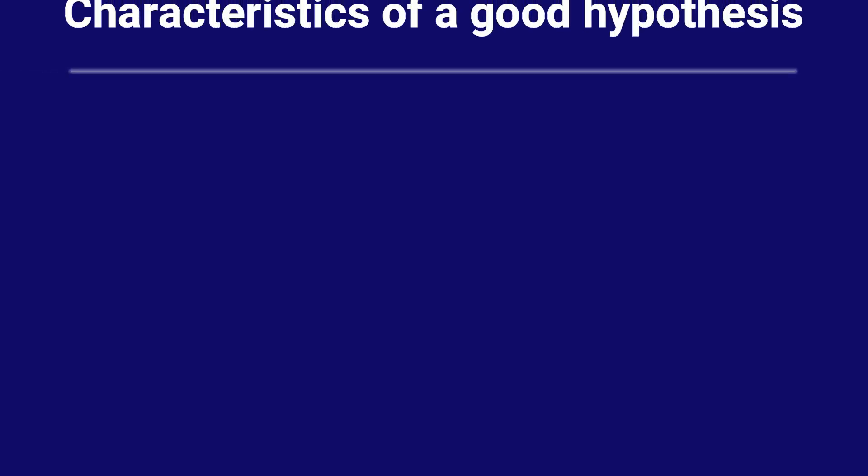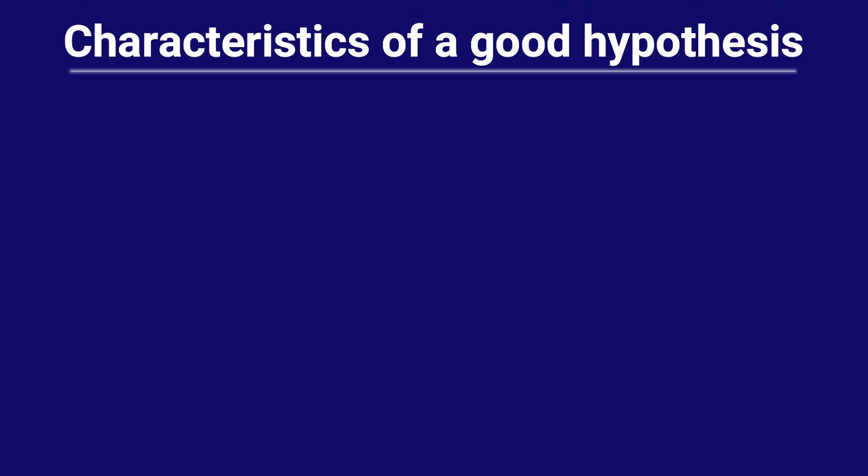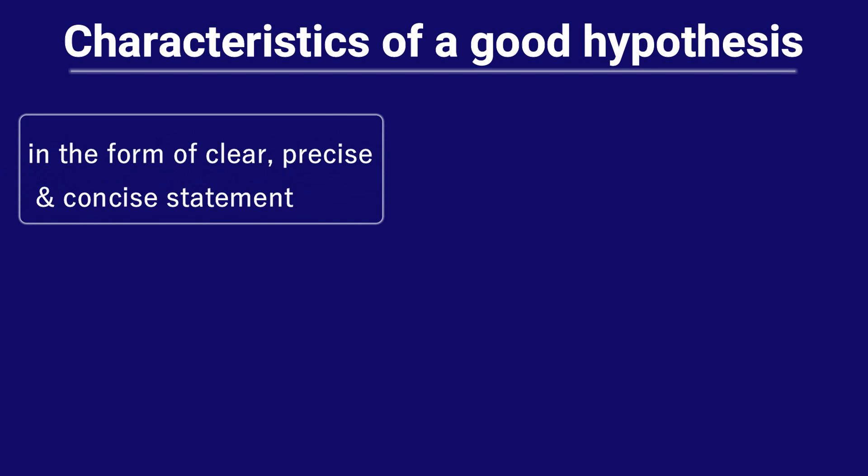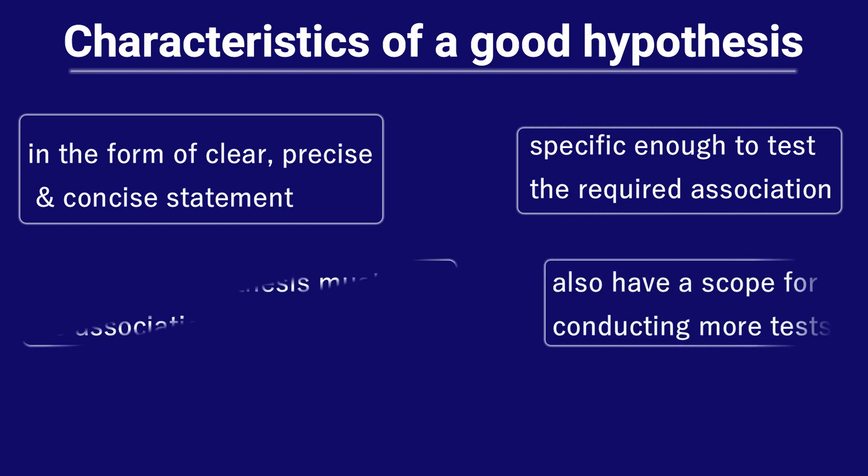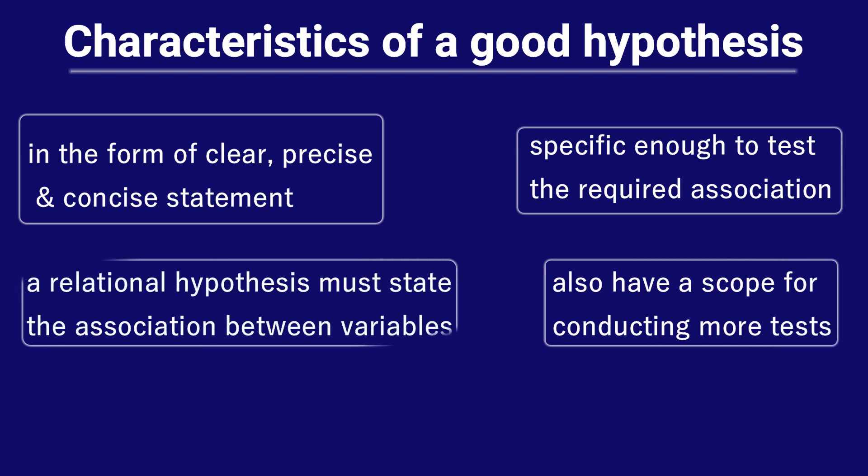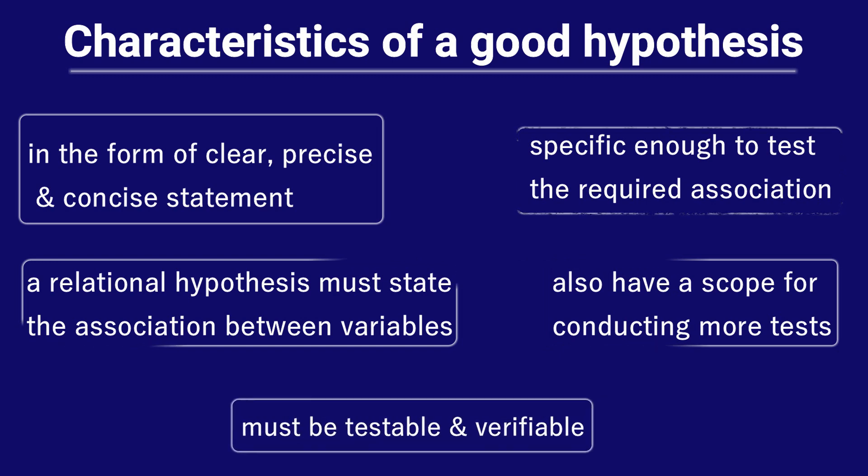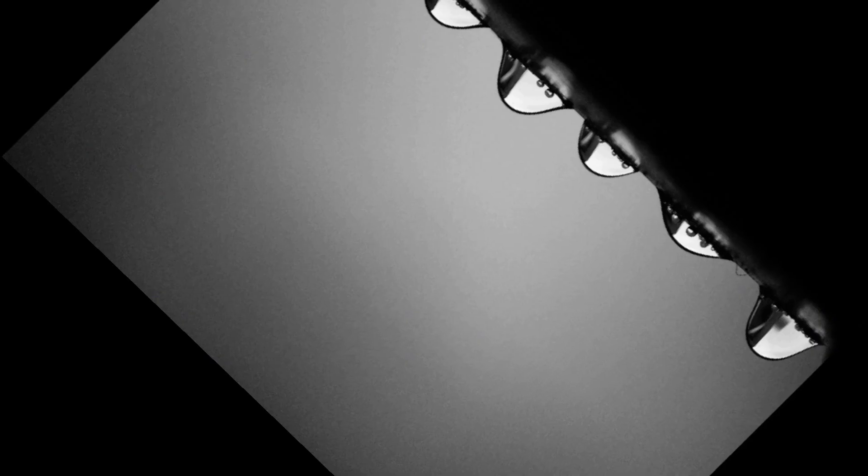Now what are the characteristics of a good hypothesis? A good hypothesis is in the shape of a very clear, precise and concise statement. A hypothesis must be very specific. It should be specific enough to enable the researcher to test the association between the mentioned variables. However, it must have a scope for conducting more tests. If the hypothesis is a relational hypothesis, then it should be stating the association between variables. A good hypothesis must be testable and verifiable.